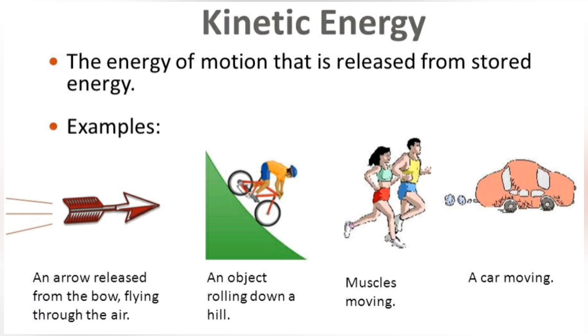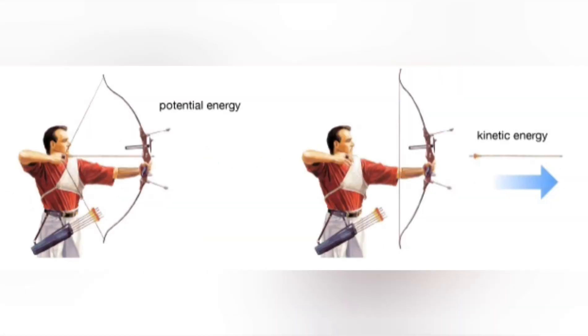When the elastic string is released, it will cause the arrow to shoot forward, which causes the potential energy to be converted into kinetic energy as the string will be moving.